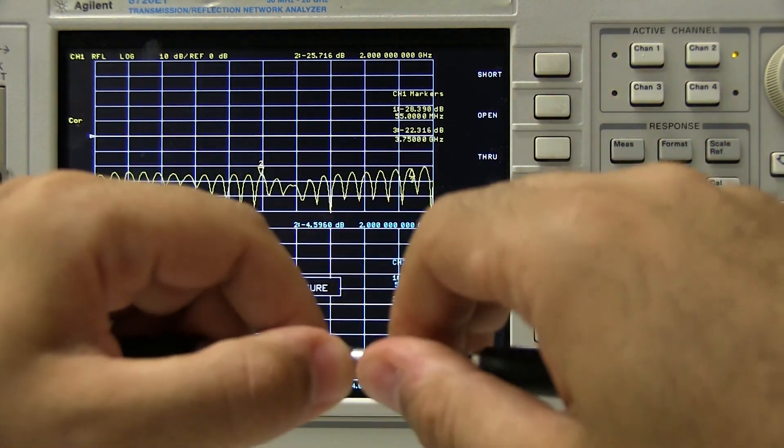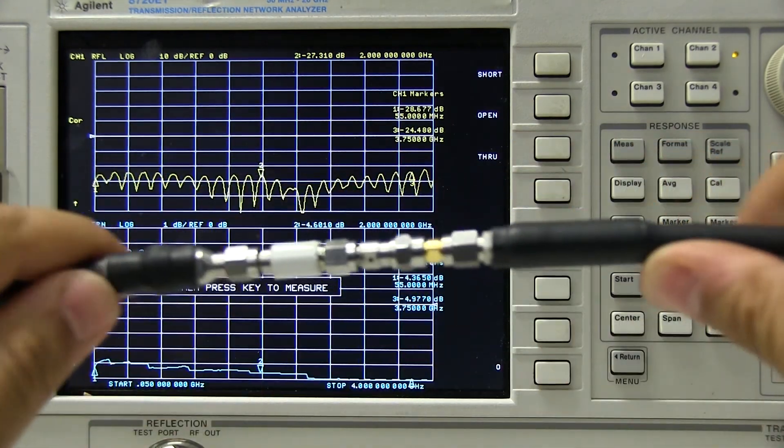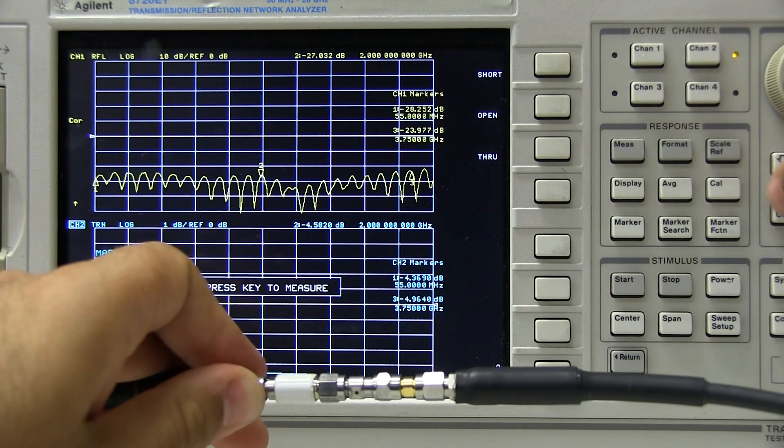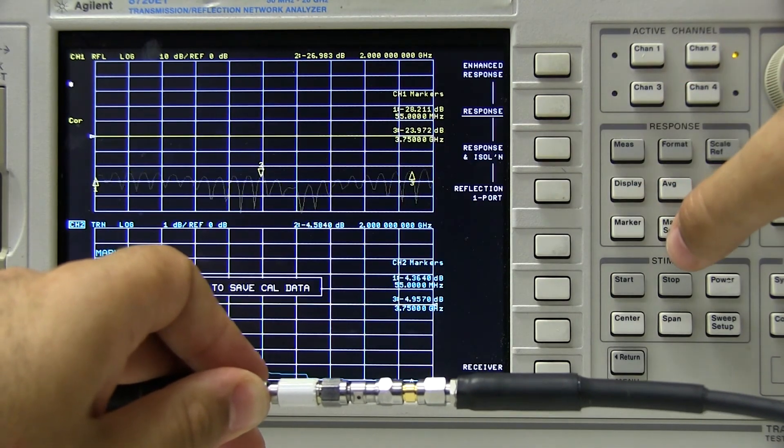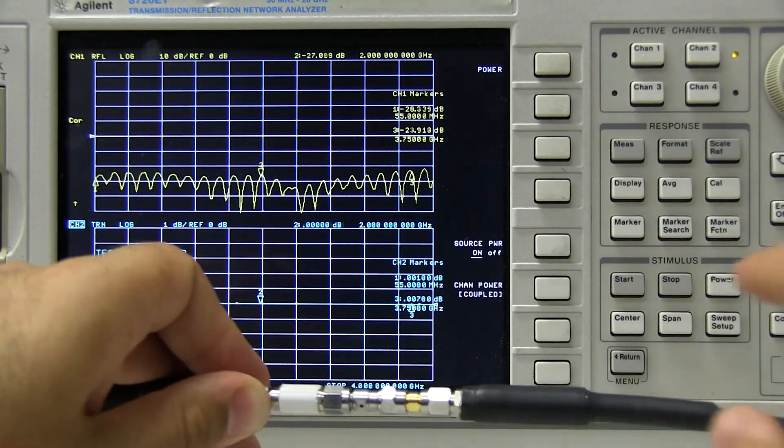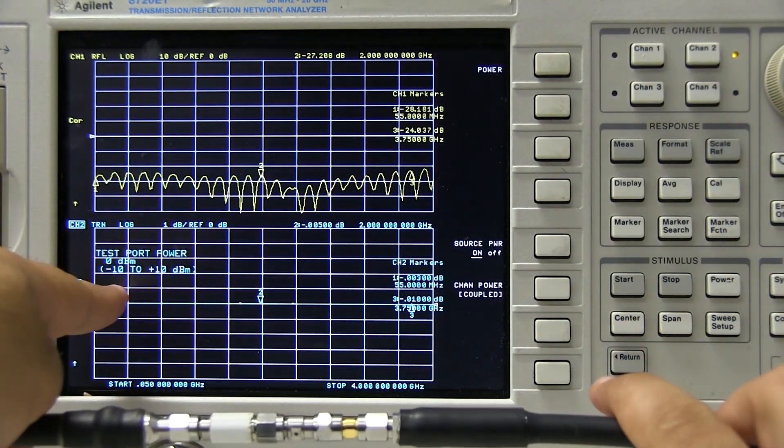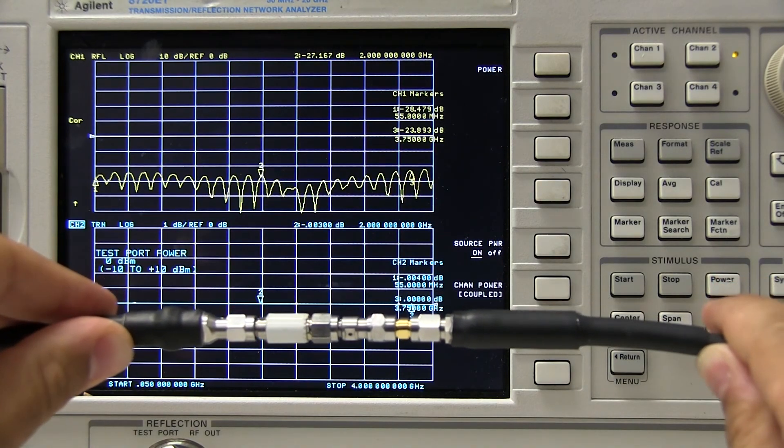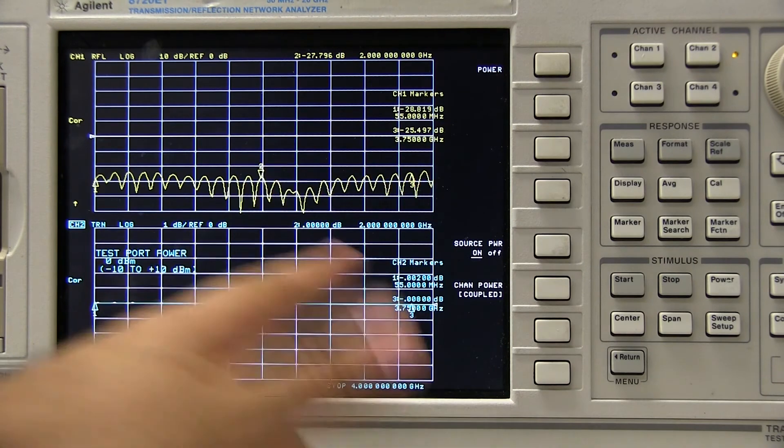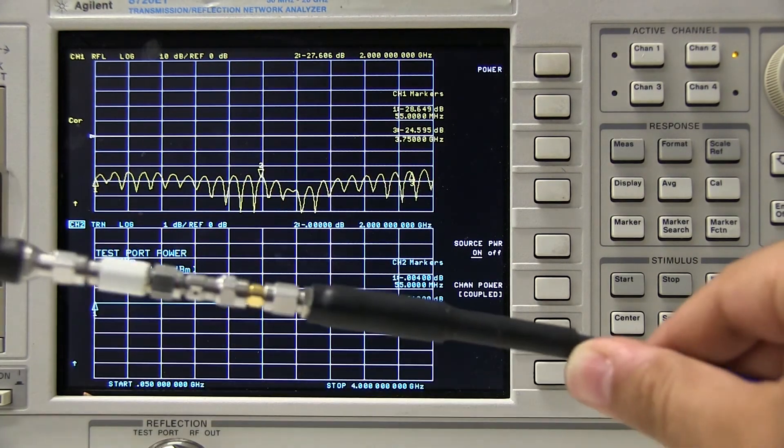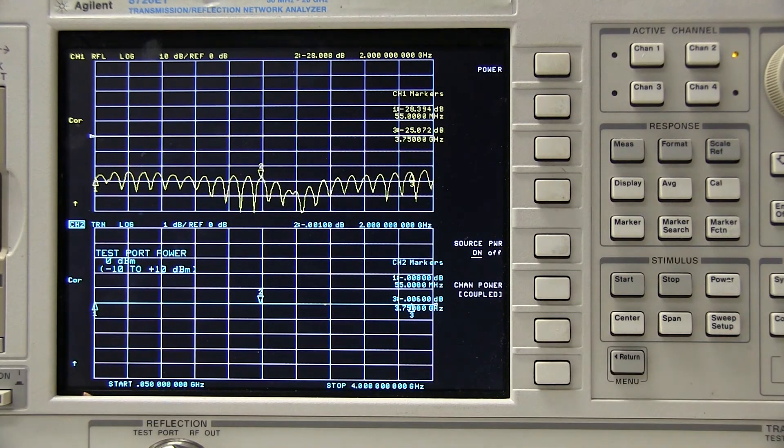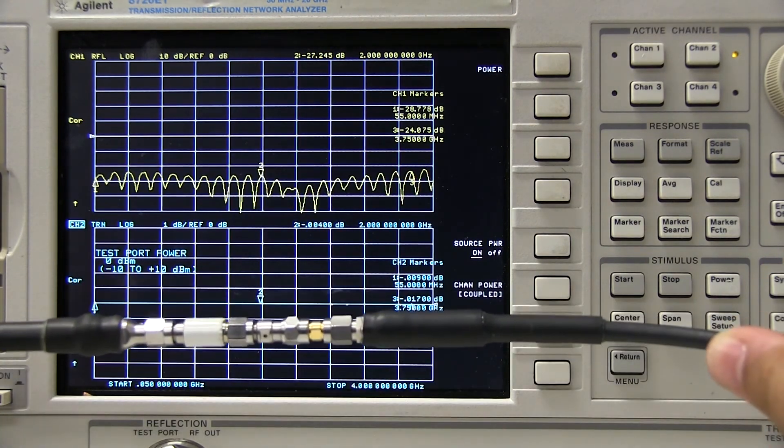So I'm connecting now the SMA through. And I will just hit the through button. It's going to measure. And then it is showing us now our response line with this through connected as zero dB of loss. So it's calibrated through the input to output as we've connected it.